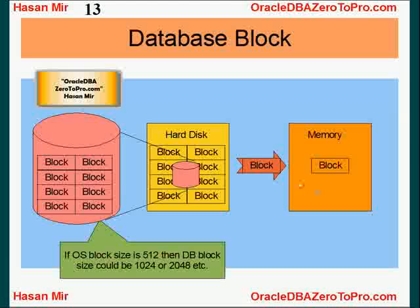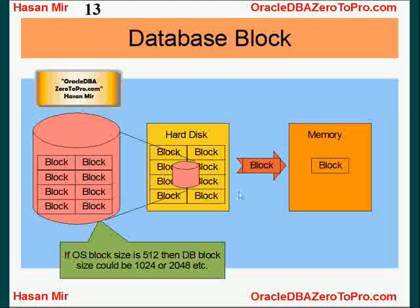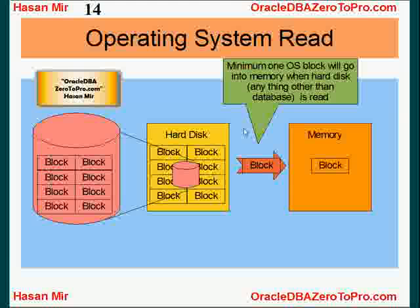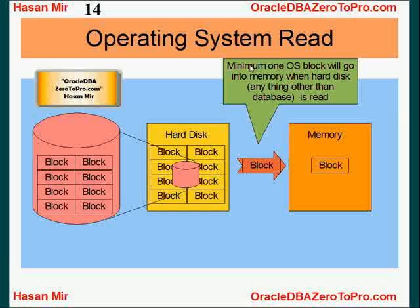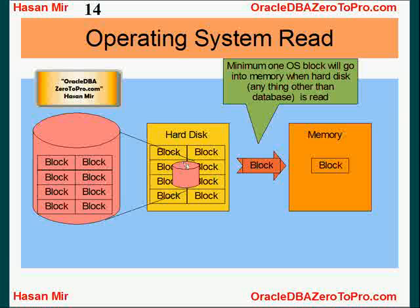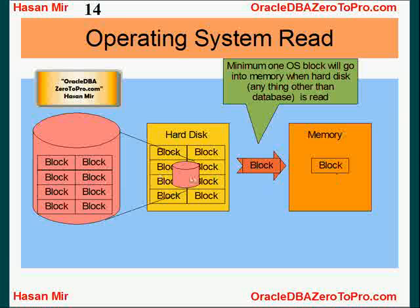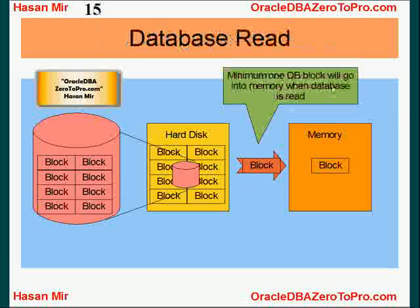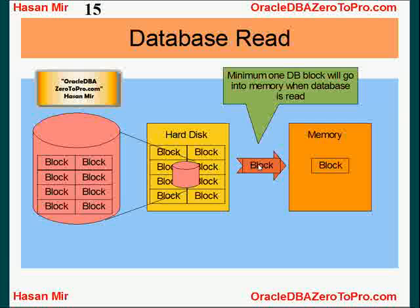That's why the database block size has to be a multiple of — and at minimum equal to — the operating system block size. To recap: when the hard disk is read, a minimum of one OS block goes into memory. When the database is read, a minimum of one DB block travels from the hard disk into memory. One DB block could equal one OS block, or two OS blocks, or three OS blocks.